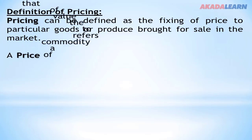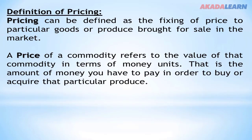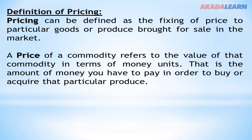What is a price? A price of a commodity refers to the value of that commodity in terms of money units — that is, the amount of money you have to pay in order to buy or acquire that particular produce.